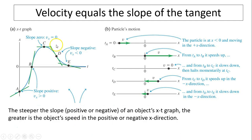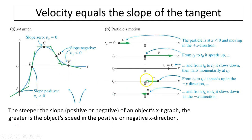Looking at graph A, a position-versus-time curve: the slope at each point represents the velocity at that point. At A, slope is positive so velocity is positive. At B, slope is still positive but larger, so velocity is bigger. At C, slope equals zero so velocity is zero. At D, slope is negative so velocity is negative. At E, velocity is also negative, but D has a steeper slope so D has a greater magnitude than E. The steeper the slope — positive or negative — the greater the object's speed.